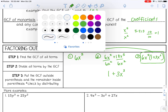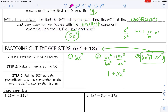To check your answer, distribute the GCF back. 6x squared times 1 is 6x squared. 6x squared times 3x cubed: 6 times 3 is 18, and x squared times x cubed is x to the fifth. So you get 6x squared plus 18x to the fifth, which matches the original expression. You can always verify by distributing back.